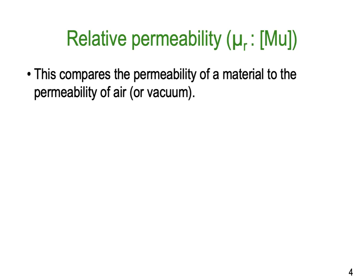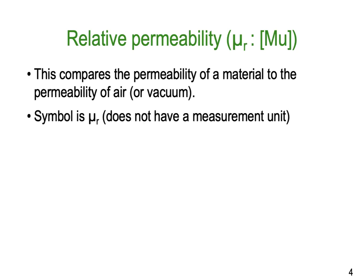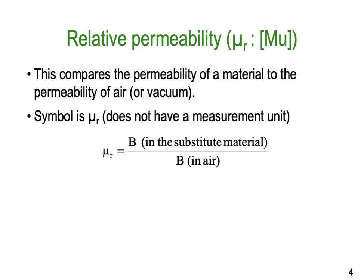The first thing we need to look at is relative permeability, and we use the symbol mu — that's what the backwards Y looks like — with a subscript R to represent relative permeability. This is an important concept; we've got to wrap our heads around this thing called permeability, or being able to conduct a magnetic field. It compares the permeability of a material to the permeability of air or a vacuum. We use the symbol mu, and it doesn't have any actual units for mu relative — it's just a standard. So mu relative is B in the substitute material compared to the B in air.